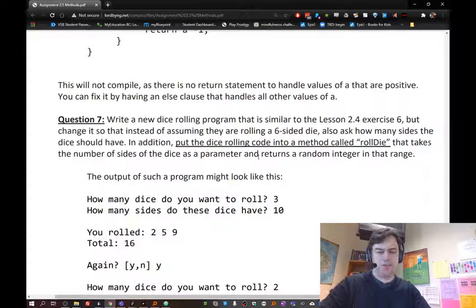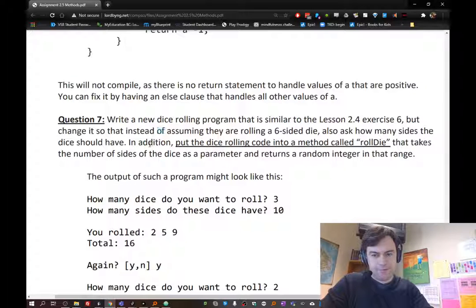Hello AP Computer Science! We are going to be taking a look at question 7 from assignment 2-5, which is all about methods.